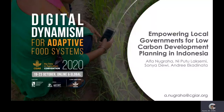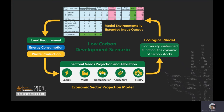Hello everyone. My name is Alfa Mugraha from ICRAF, Indonesia. I will present our work on empowering local governments for low carbon development planning in Indonesia. As one of the objectives of low carbon development planning in the economic structure of the region, especially at the provincial scale, it can be related to changes in environmental conditions, namely greenhouse gas emissions, using the basic framework of the extended input-output table with environmental aspects. The EEIO model can evaluate the relationship between economic activities and environmental impacts, such as how an economic sector produces pollution or emissions compared to its output.